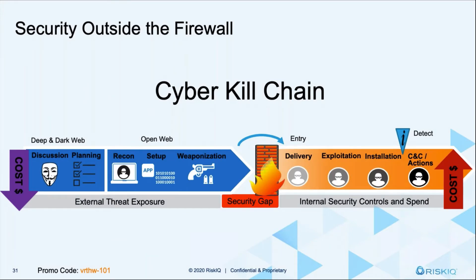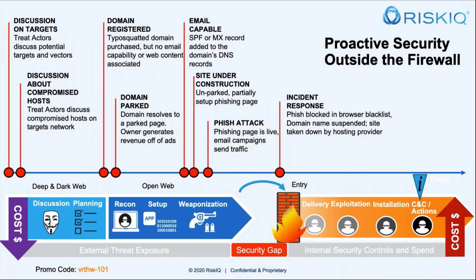With a cyber kill chain, the thing you need to think about is the earlier you can detect something and stop it, the less risk to the organization and the least amount of cost. If you can find out something happening during a planning stage and stop it — during the recon, the setup, or the weaponization, prior to it getting into your organization — you're in a lot better shape. Most organizations put their money where they have control and visibility, and that's from the firewall in. RiskIQ focuses on everything outside the firewall. We're like a SIEM on the Internet — we see all this data, collect it, understand it, and we can feed that information into your internal systems to make them smarter and faster.